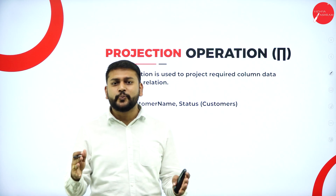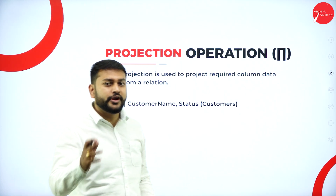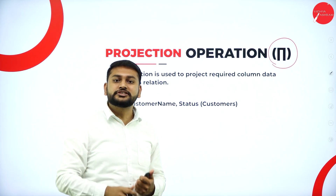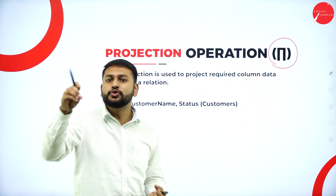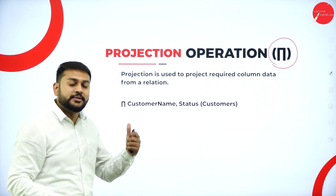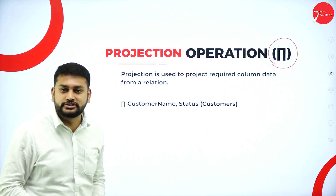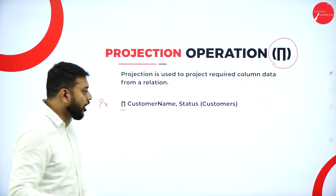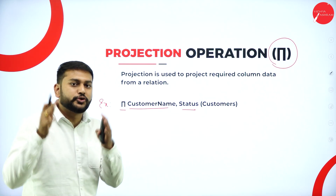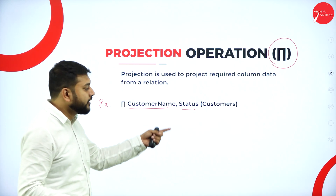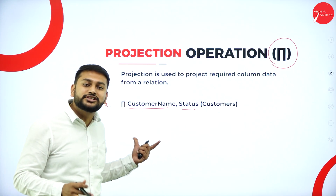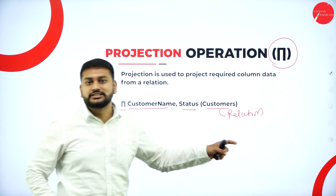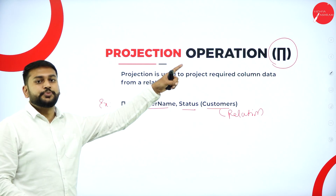The next operation is the projection operation. The first thing to remember about the projection operation is its operator symbol. I will mainly use this to select columns. In the previous one we discussed the selection operation, which is used to retrieve tuples. But when it comes to columns, I will be using the projection operation. For example, using the projection operator, I write the columns I need to project: customer name, then status. I mention the name of the relation within the parenthesis.